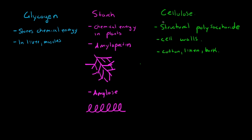Then we have starch, which is chemical energy in plants. It can come in two different forms: amylopectin, which is a branched form — all three of these are just long chains of glucose molecules — and then amylose, which is in a ringed alpha-helices shaped conformation.